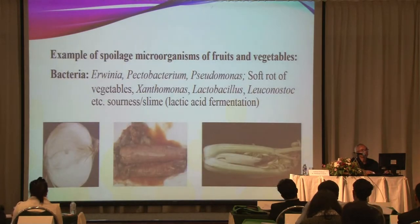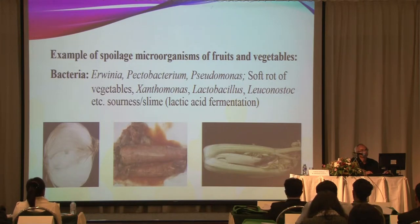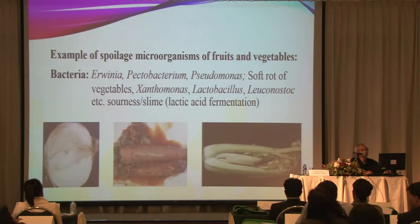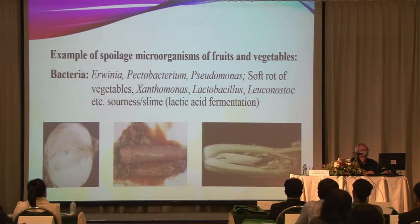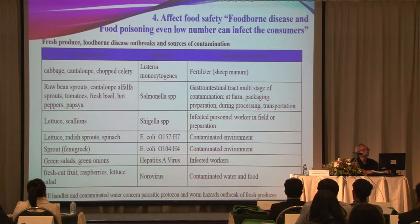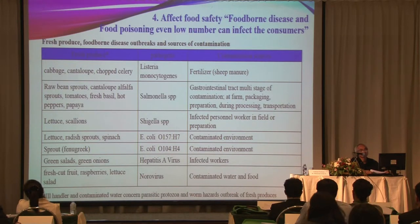Examples of spoilage bacteria in fruits and vegetables include Erwinia, Pectobacterium, and Pseudomonas, which can cause soft rot of vegetables. As fermentative organisms, Lactobacillus and Leuconostoc can produce lactic acid fermentation and cause souring. Some molds can also cause spoilage and produce toxins.